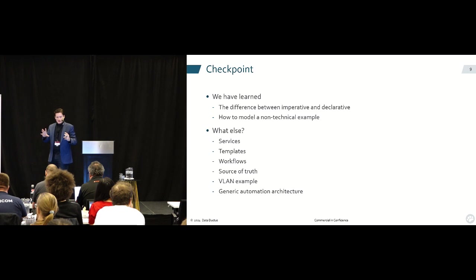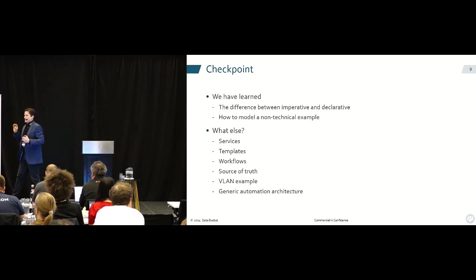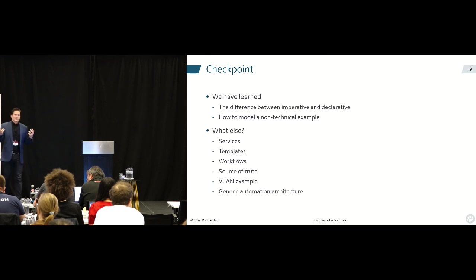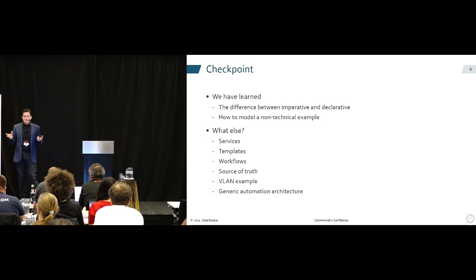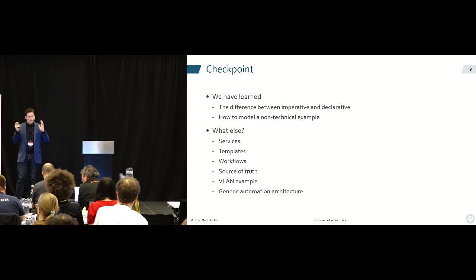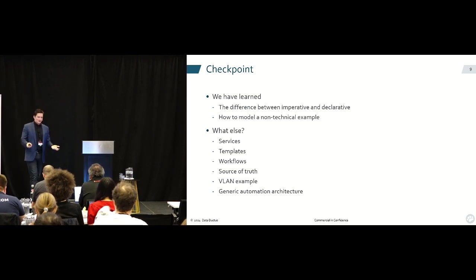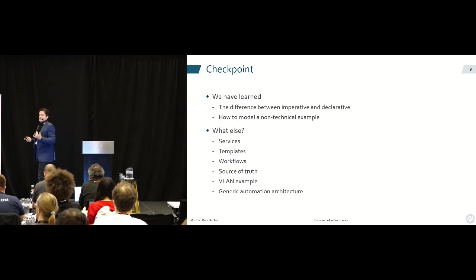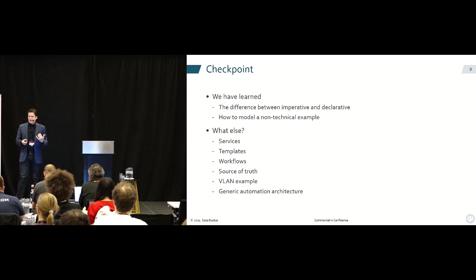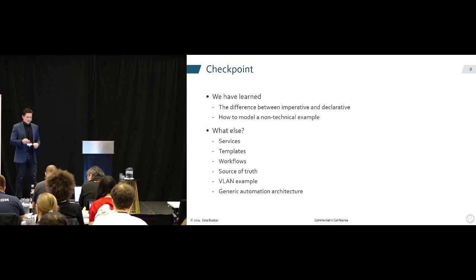So let's do a little checkpoint here. What have we learned so far? We've talked about imperative, which is the how, and declarative, which is the what. And we've modeled out this non-technical example. What's coming up? We have services, templates, workflows, source of truth, VLAN, and a generic automation architecture. What I want to do is break down each one of these things and explain what they're actually doing, where they sort of fit in, and then fill it in with a VLAN example.